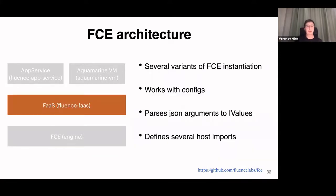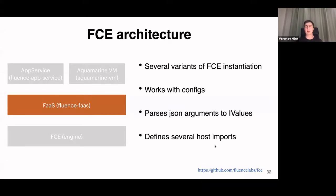On the second layer we have a functions service. Its main goal is to work with configs, parse JSON arguments to IValues, and define host imports. It has many constructors that can construct a functions service in different ways — with configs, with a set of files, and so on.